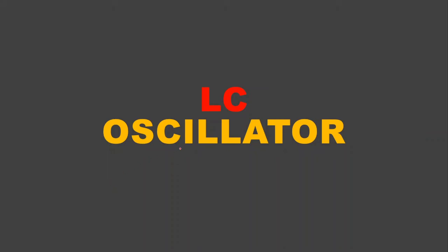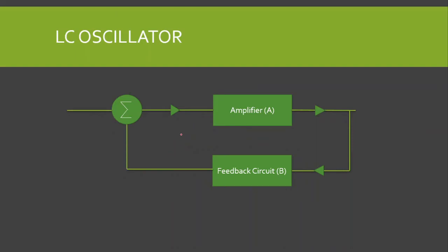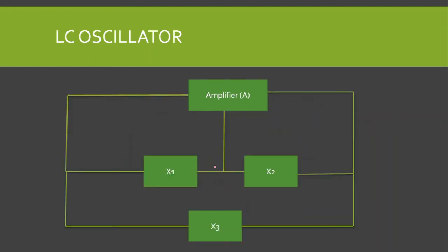Welcome to Technically Explained. In this lecture we are going to study LC oscillators. This is the basic diagram of the oscillator. In LC oscillators, the LC circuit is used as a feedback circuit. The amplifier provides a phase shift of 180 degrees and the LC circuit also provides a phase shift of 180 degrees, so the overall phase shift is 360 degrees. The LC circuit, or tank circuit, is used as a feedback circuit.